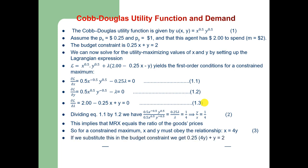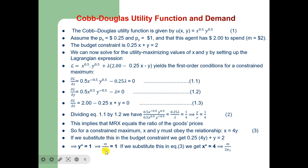Substituting this into the budget constraint, we get 0.25(4y) + y = 2. This means y* = 1, which can also be expressed as m/(2p_y) = 1. This is the optimal value of y when the consumer is maximizing utility. Substituting back gives x* = 4, which equals m/(2p_x).